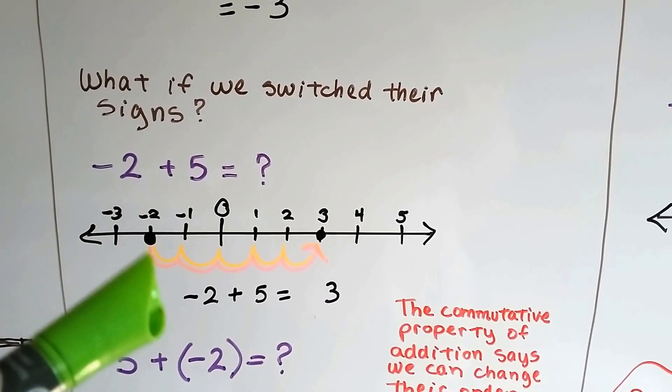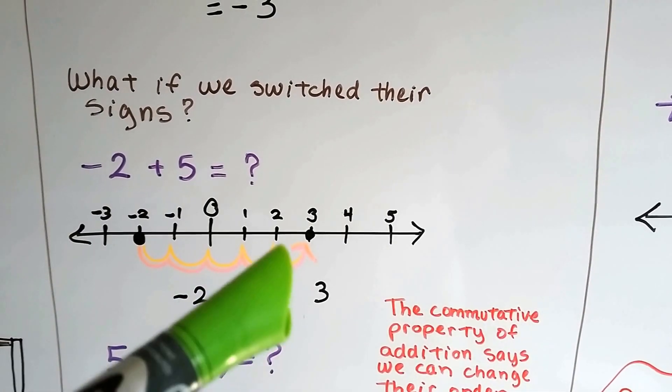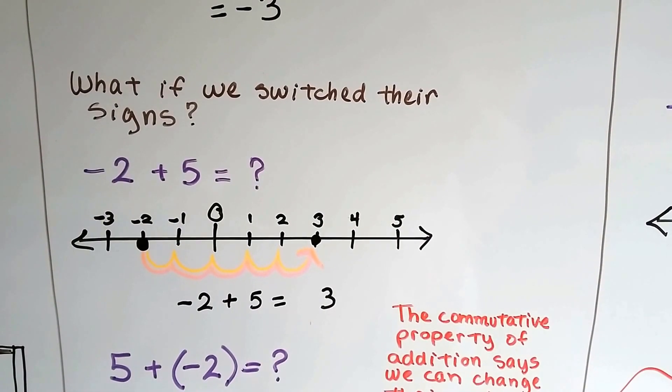Well, now we start at the negative 2, which is right here, and we're going to add 5. 1, 2, 3, 4, 5. Now, instead of negative 3, we get a positive 3.